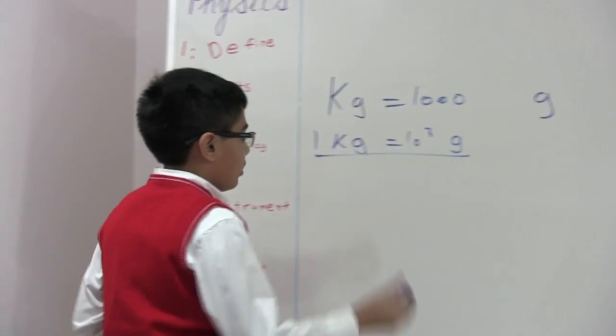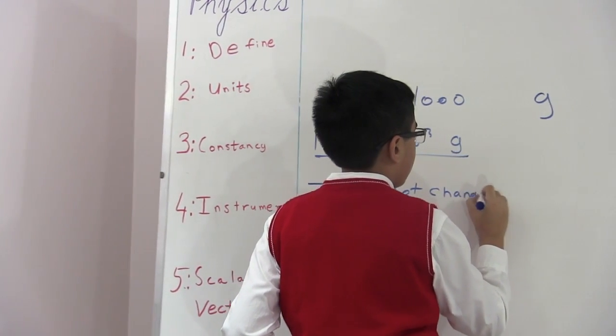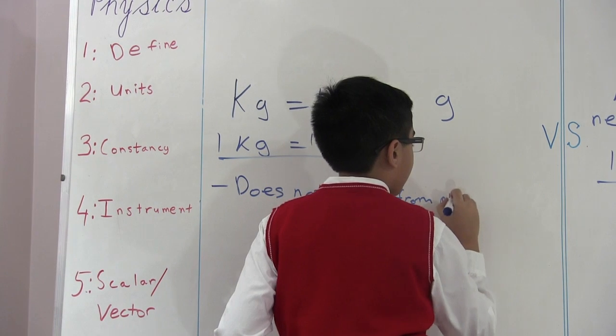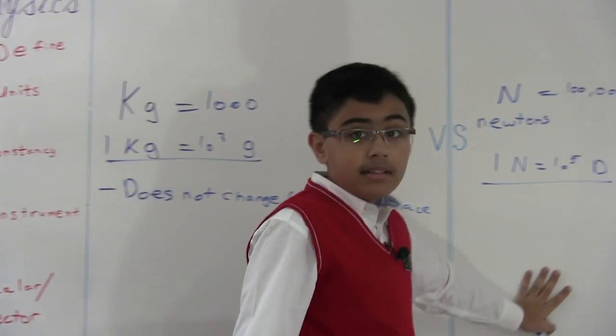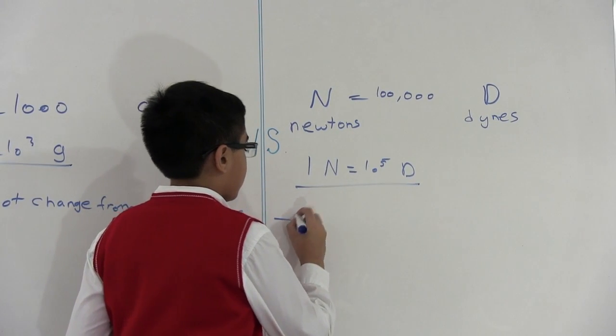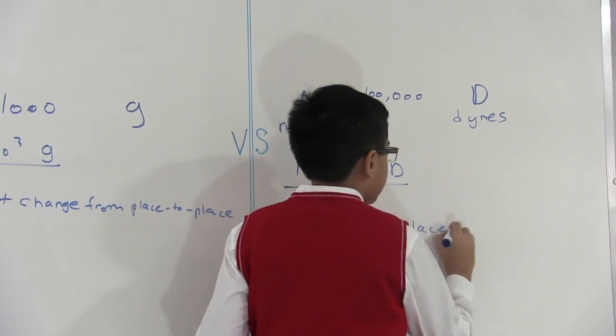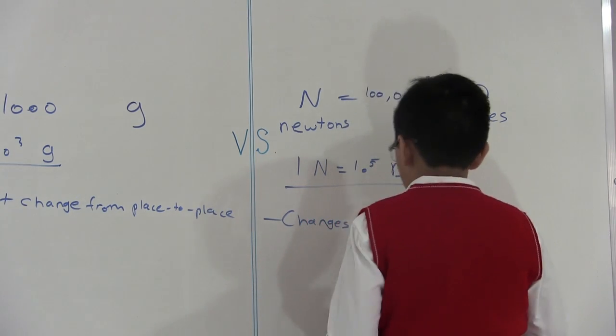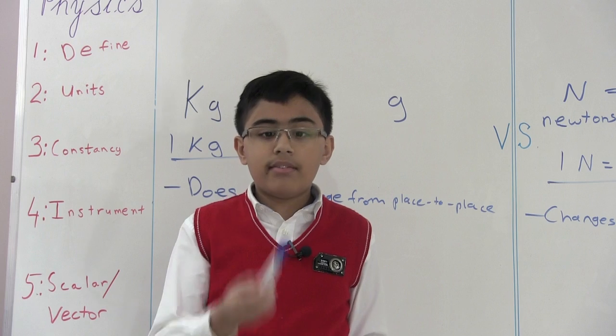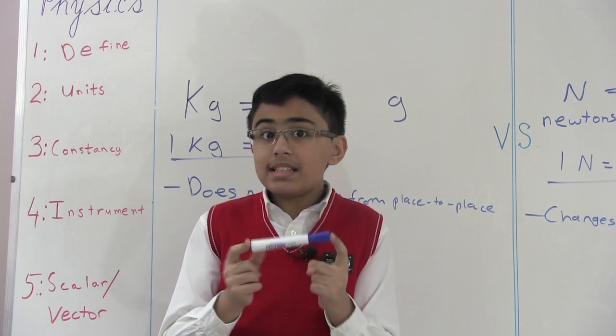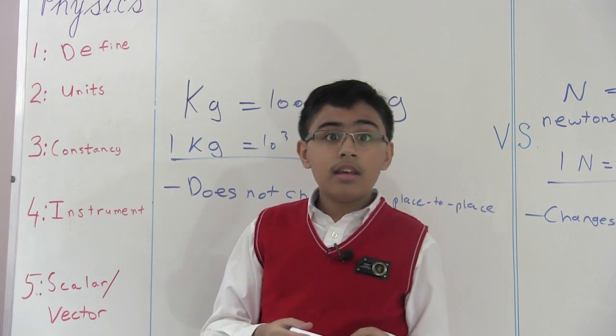However, weight. And I'm just going to note that down so you remember. Does not change from place to place. Because mass will not change from place to place. It's that simple. However, weight. Pretty different. Changes from place to place. And mark my words. This may change. Not necessarily. For example. This marker. And also since weight is just the force, the amount of force that gravity is exerting on this marker. That means if there's less gravity over there, this will have less weight. If there's more gravity on the sun obviously, this will weigh more on the sun.